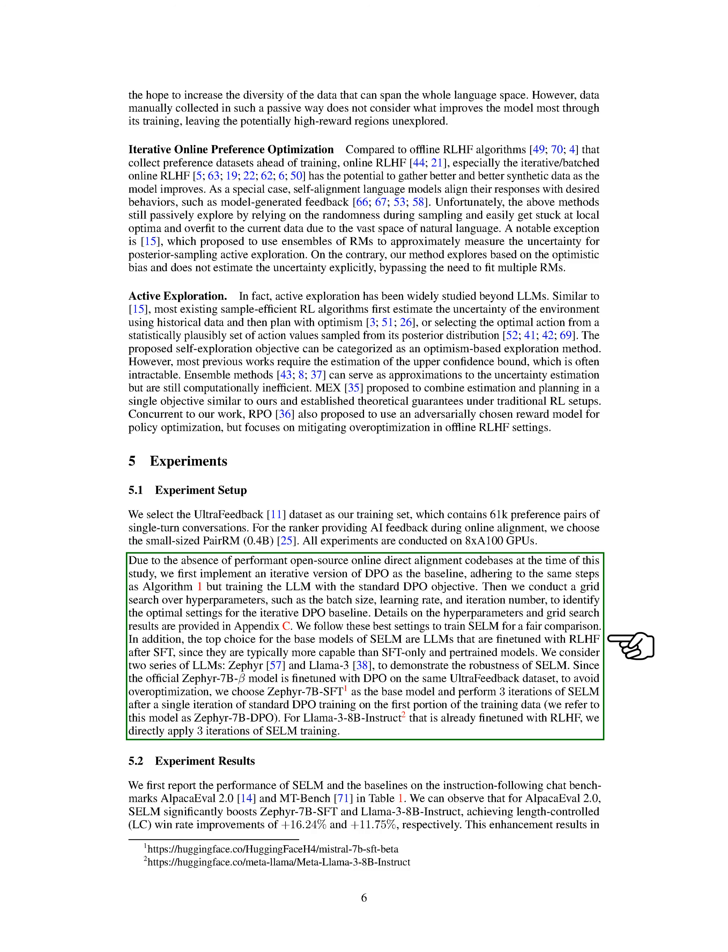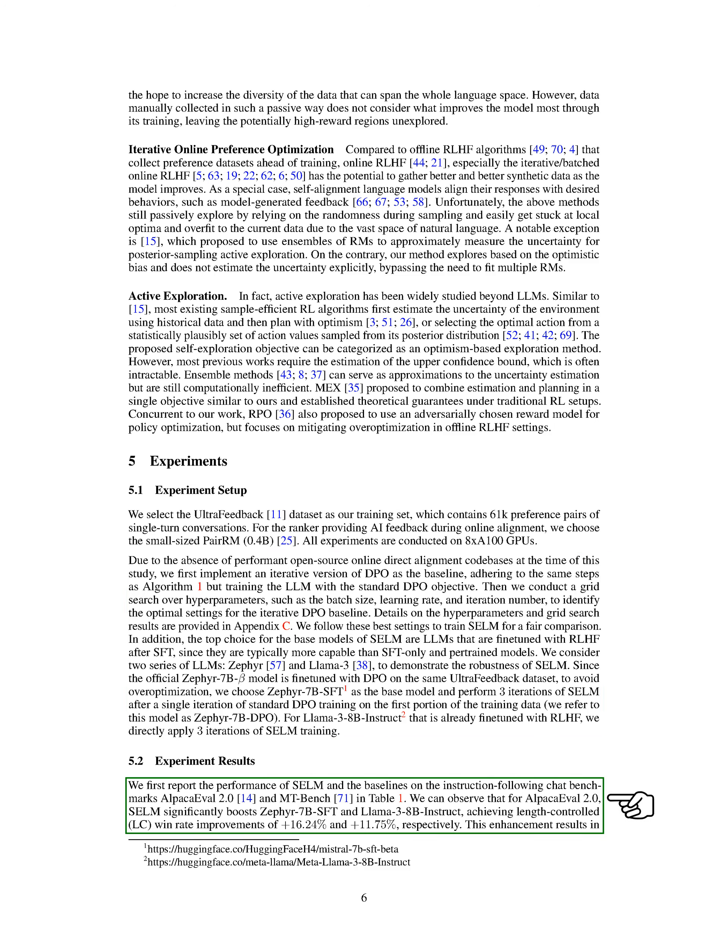For our experiments, we use the Ultra Feedback dataset with 61K conversation preference pairs. We train on 8x A100 GPUs using the pair-RM ranker for AI feedback. We start by implementing an iterative version of DPO as a baseline and then conduct a hyperparameter grid search to optimize settings. We train SELM using the best settings and LLMs fine-tuned with RLHF after SFT. We test SELM on ALPACA EVAL 2.0 and MTBench benchmarks, showing significant improvements over baselines. SELM consistently enhances model performance in each iteration, outperforming other post-training algorithms like SPIN, DNO, and SPPO.